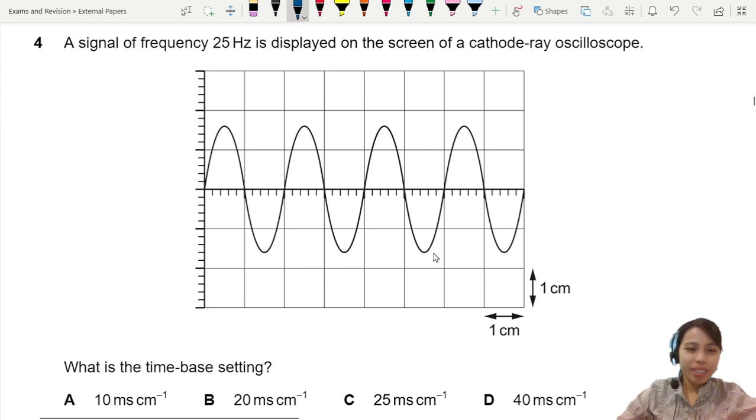Time-base setting is basically saying, look at all the units here, milliseconds per cm. Basically, if you have this one cm, how much time is it?